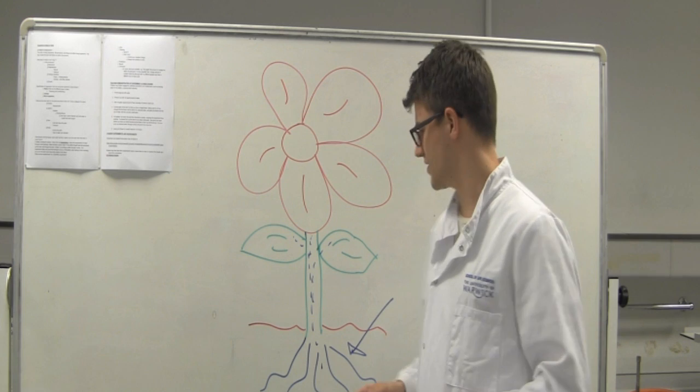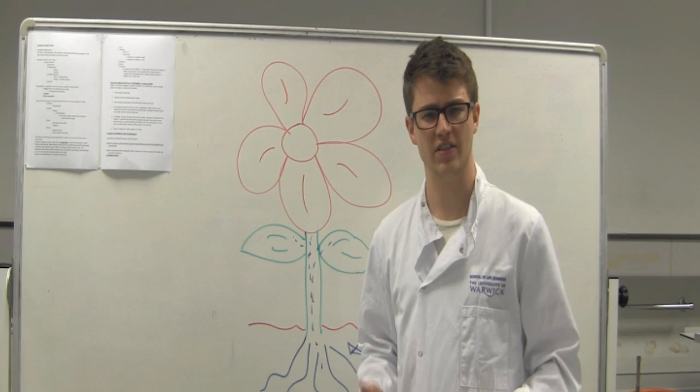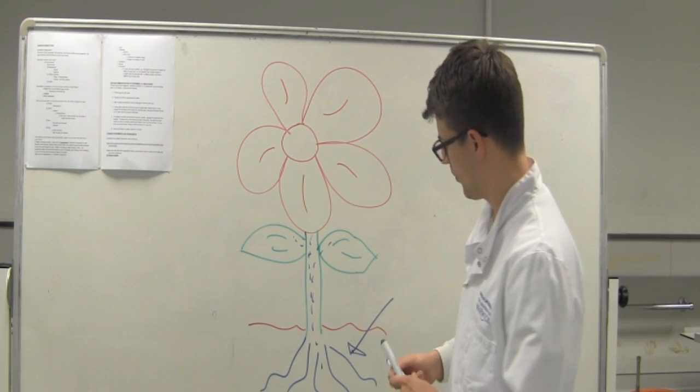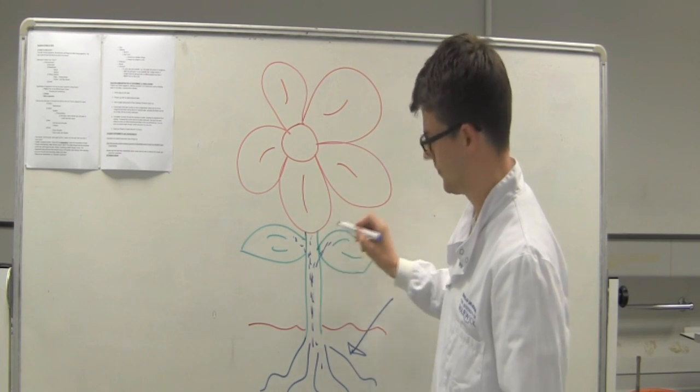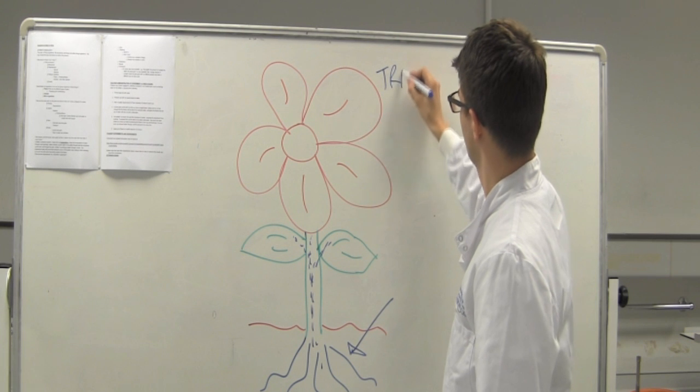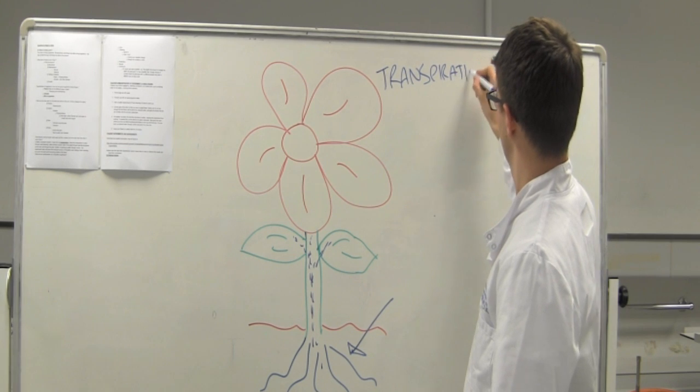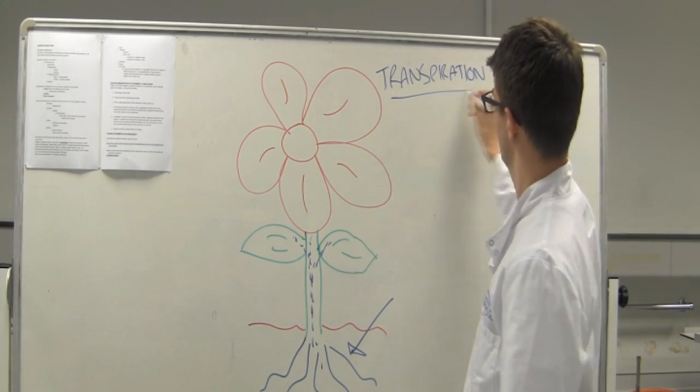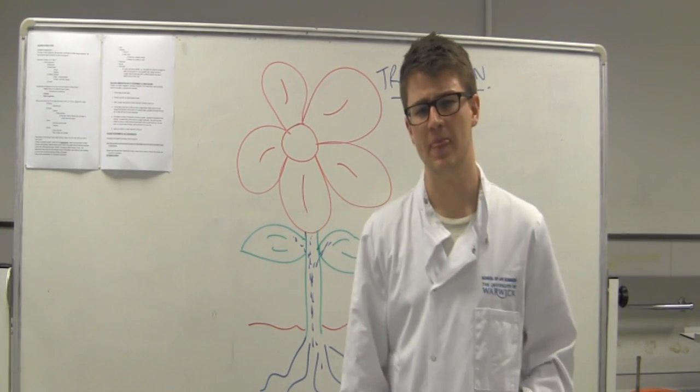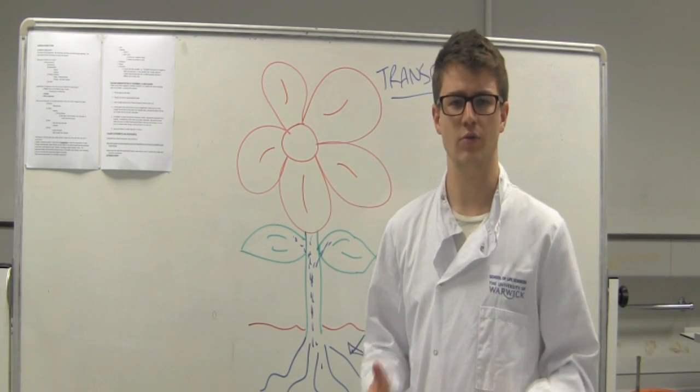Through openings in the surface of the plants, water can evaporate a bit like a puddle on a sunny day, which pulls water from the bottom of the plant to these areas. This process is called transpiration. But how do we prove this is going on and how do we know which direction it's going in? That's what we're going to show today.